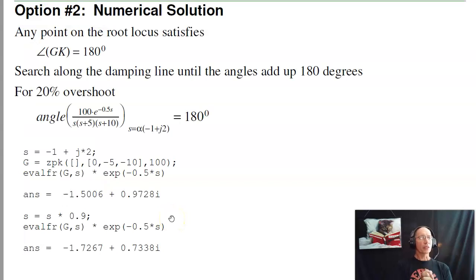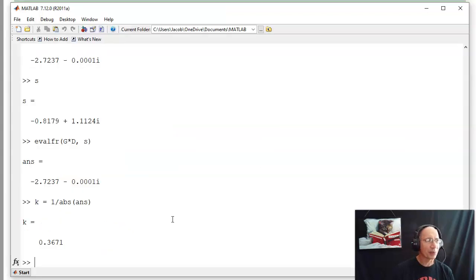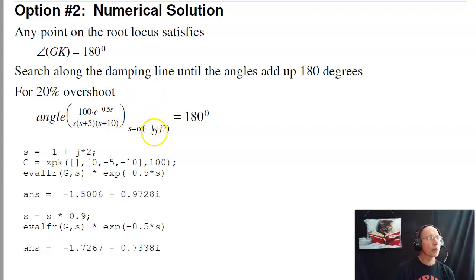Along those lines, there's another way to find the gain for a system with a delay. Instead of using a Pade approximation, why not use an actual delay? MATLAB can handle a delay, that's just e to the minus 0.5s. There's actually no reason to use a Pade approximation. I'm just going to search until the angles add up to 180 degrees.